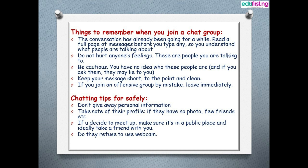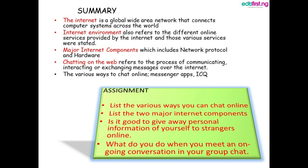I sincerely hope you have enjoyed this topic. In summary, we talked about the internet, internet environment, major internet components, and chatting on the web — which refers to the process of communicating, interacting, or exchanging messages over the internet. We also talked about the various ways to chat online with messenger apps and ICQ. Now make sure you answer the questions on your assignment list. Number one: list the various ways you can chat online. Two: list two major internet components. Three: is it good to give away personal information to strangers online? Four: what do you do when you meet an ongoing conversation in a group chat? Have a great day. Thank you.